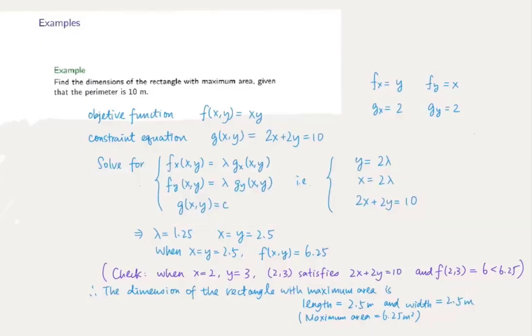We formulate this constraint optimization problem into an objective function f(x,y) equals x times y, and the constraint equation 2x plus 2y—let us denote it as g(x,y)—equals 10.